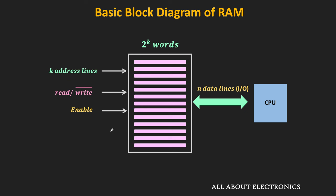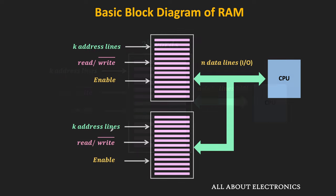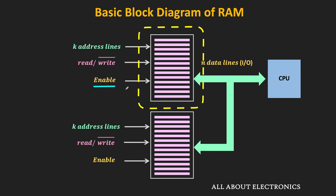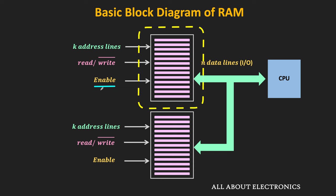The read-write control pin selects either the read or the write operation, and the enable signal enables the memory. The need for the enable pin is that sometimes multiple memories are connected with the CPU, and with the help of this enable pin it is possible to select a specific memory during the operation.